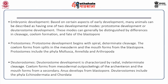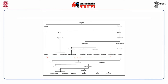Animalia is classified as parazoa and eumetazoa. Eumetazoa is further subdivided into radial and bilateral symmetric animals. Radial symmetry includes diploblastic animals — cnidaria and ctenophores. Bilateral symmetry is exhibited by triploblastic animals divided into protostomes and deuterostomes. Protostomes include acoelomates, pseudocoelomates and coelomates. Deuterostomes include coelomates, among which are echinodermata and chordata. Chordata is further classified as cephalochordata, urochordata and vertebrata. Vertebrata is further classified as Pisces and tetrapods. Pisces include chondrichthyes and osteichthyes. Tetrapods are classified as amphibians, reptiles, aves and mammals.